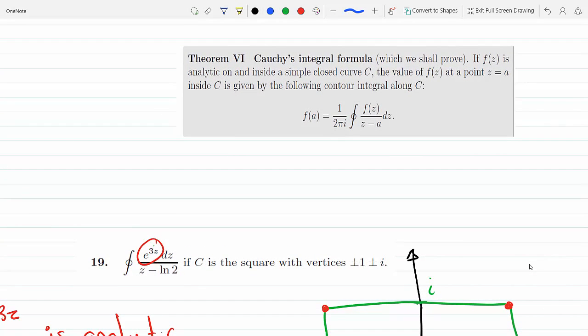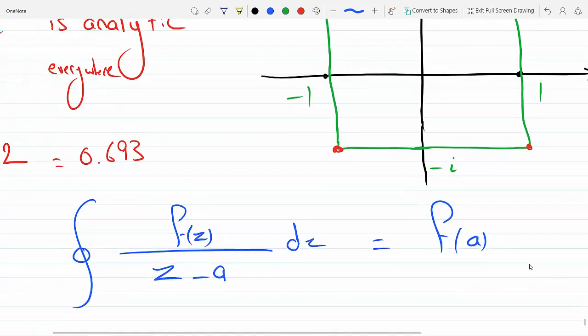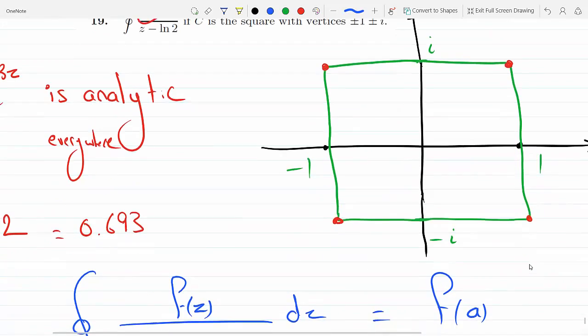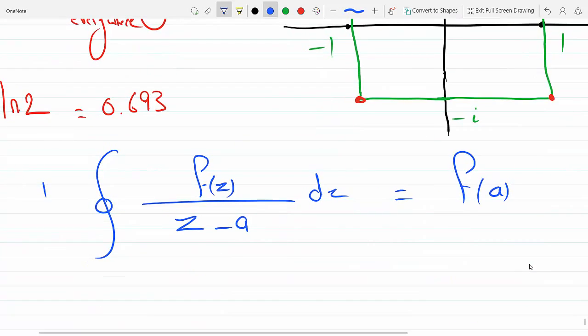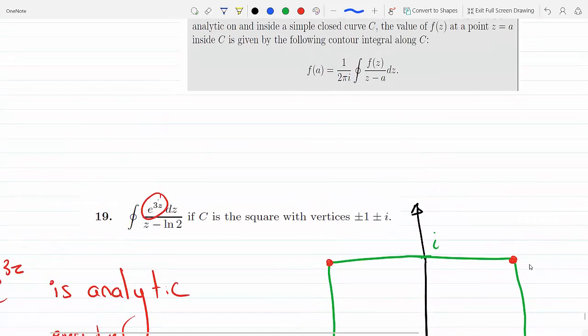If f(z) is analytic on and inside a simple closed curve C, which it is in this case, the value of z at z equals a inside C is given by the following contour integral. There's a 1/(2πi) here: that closed integral of f(z)/(z-a) dz has to equal f(a).